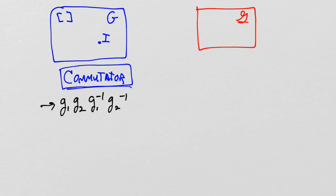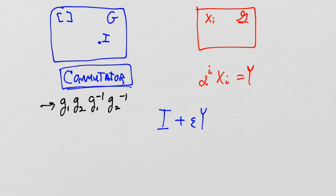We think about group elements very close to the identity. To construct a matrix group element close to the identity, we write the identity I plus a very small number ε times a generator Y. This generator Y can be written as αᵢXᵢ — any element of our vector space. If ε is small enough, this will be within the neighborhood of the identity, with higher-order terms negligible, representing a group element infinitesimally close to the identity. Call this G₁.